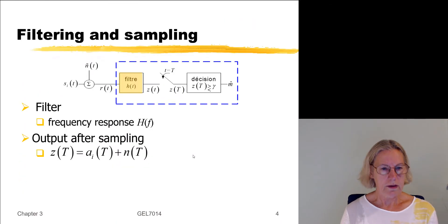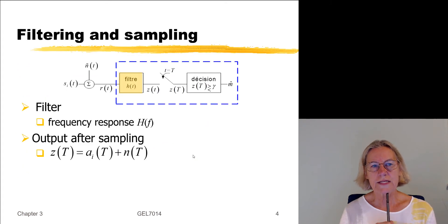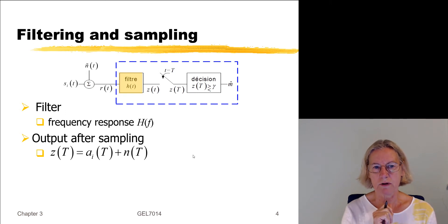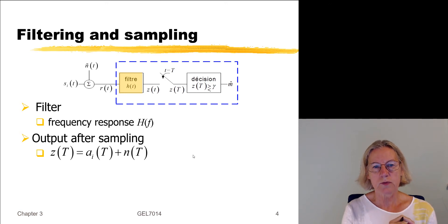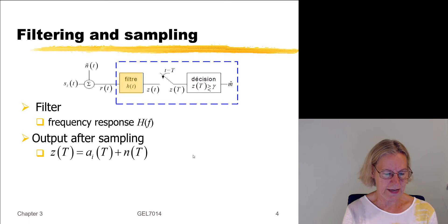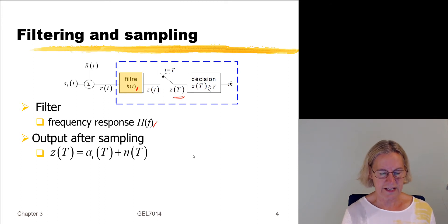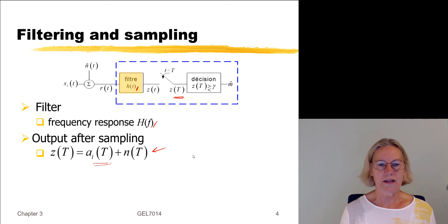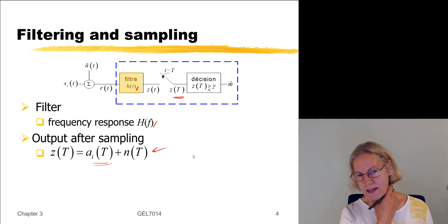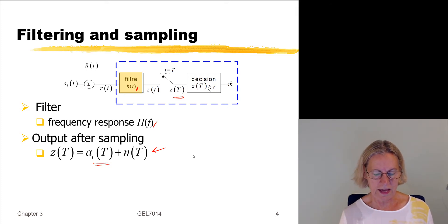We saw last time the form of the linear sampling receiver, and we saw that the first element in the receiver is a filter, characterized either by its impulse response or by its frequency response. After the sampling, we have this test statistic, given by an expression where there is a signal component, which depends on which symbol is being transmitted, and there's a component from the additive noise.